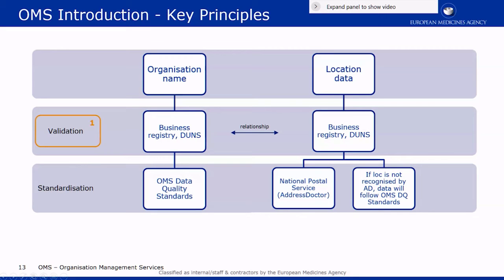Our sources depend on whether we're talking about an organization within an EEA country, or in case it's outside, we may be using the DUNS website as a source for validation of information. After we validate not only the existence of the data, but also the relationship between organization and location, we are free to register the data in our dictionary.